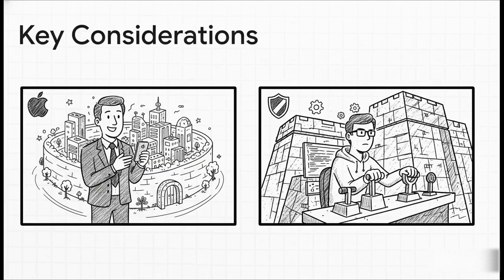For users and organizations that need a high level of security integrated into a user-friendly and robust ecosystem, iOS — particularly with Advanced Data Protection enabled — is an exceptionally strong choice. However, for technical users, maybe journalists, dissidents, or anyone with an extreme threat model who requires absolute maximum control, transparency, and the most aggressive hardening available, GrapheneOS is the superior option.